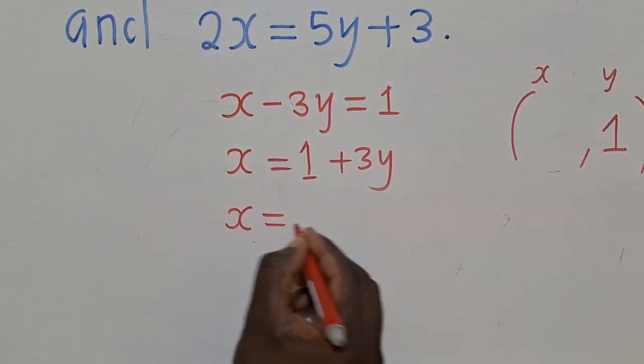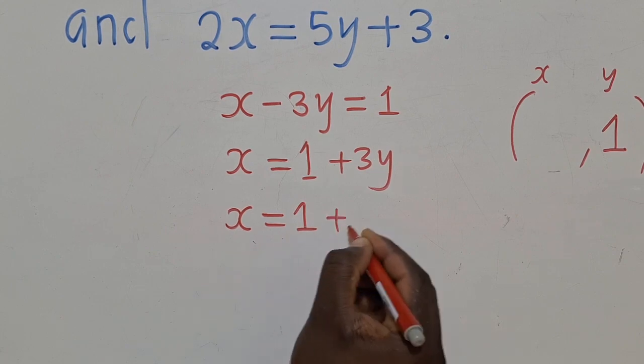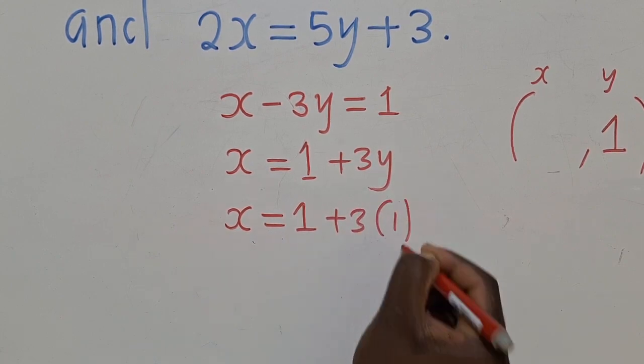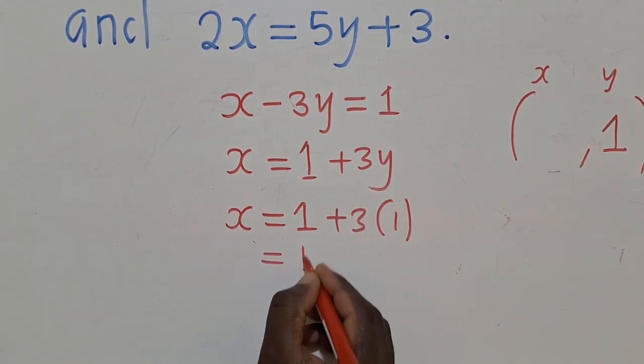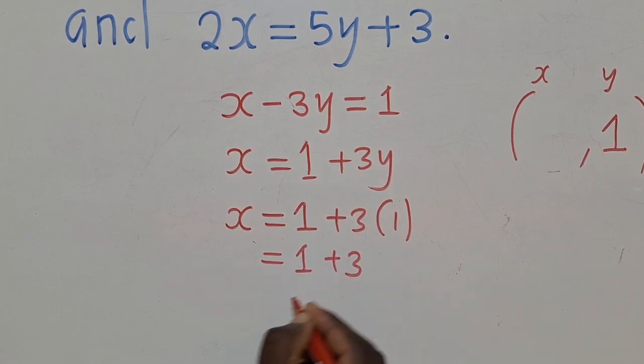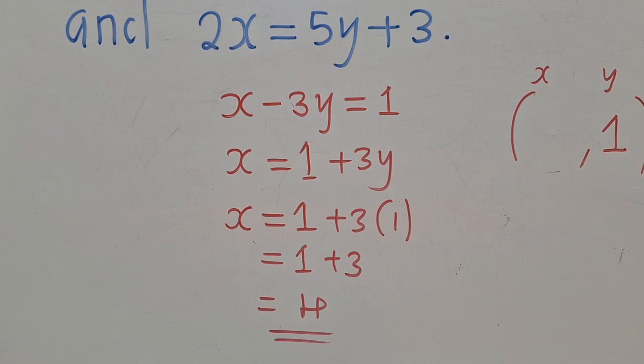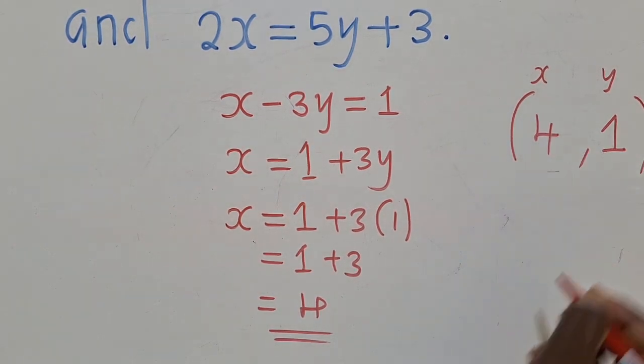Where I'll say x is equal to 1 plus 3, open bracket 1 there. So this will just be 1 plus 3, which is 4. So the x value in this case is what? It's 4. So we write 4 there.